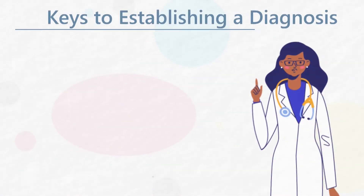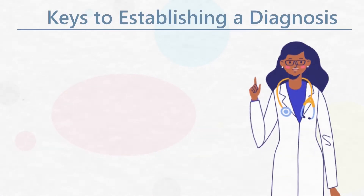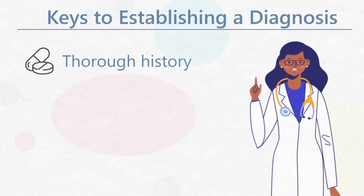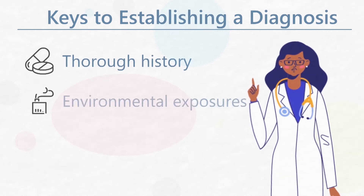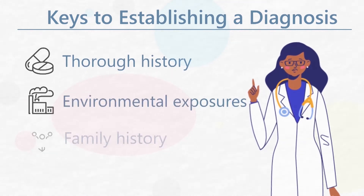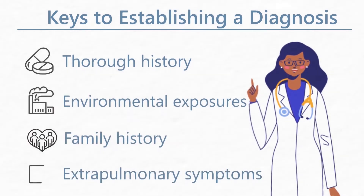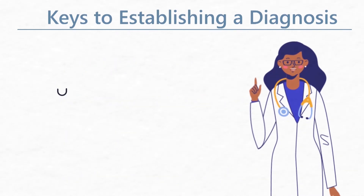The keys to establishing a diagnosis include taking a thorough history, including information about medications, environmental exposures, family history, and extra-pulmonary symptoms, particularly those relating to autoimmune disease.